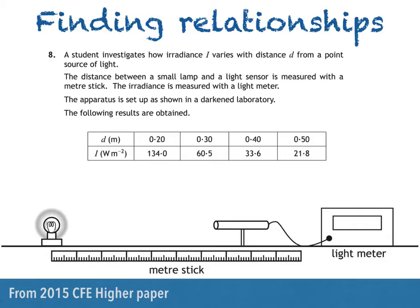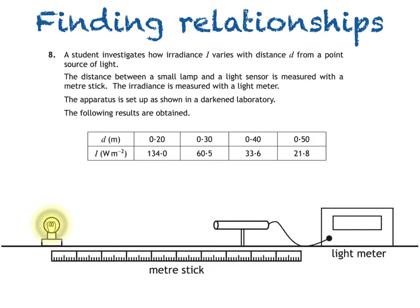To carry out the investigation, after switching on the lamp, the light sensor is placed at a distance of 0.2 metres from the lamp, and the irradiance is measured with a light meter. This is then repeated for distances 0.3, 0.4 and 0.5 metres from the lamp.